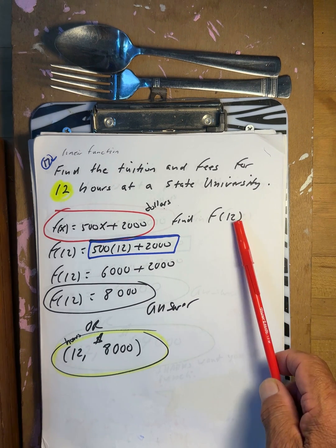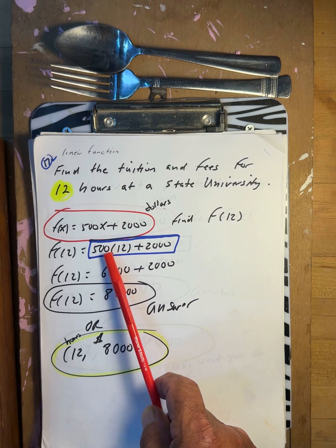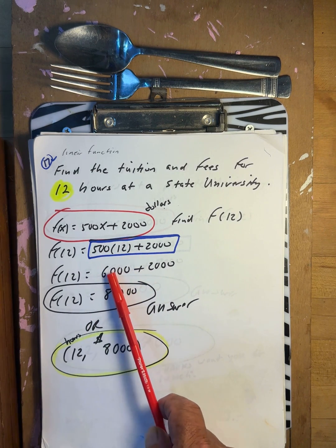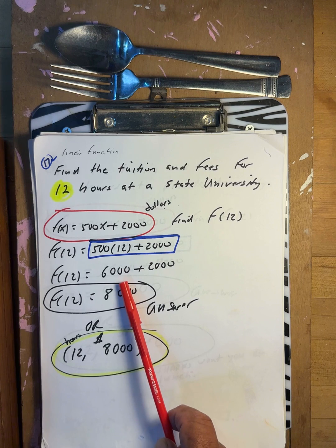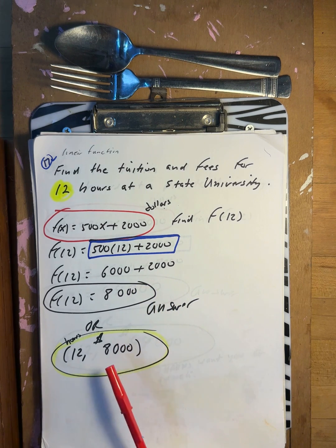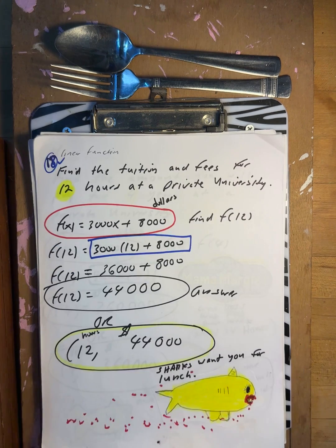Find tuition and fees for 12 hours at a state university. f of 12: 12 times 500 is $6,000, plus $2,000 in fees gives $8,000. So 12 hours at a state university costs $8,000.